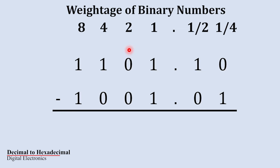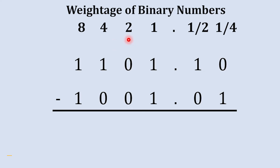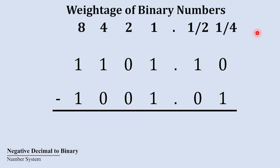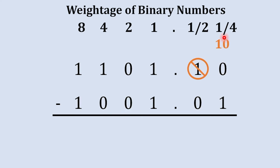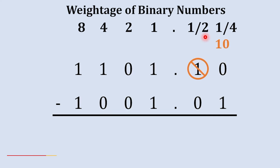When we borrow 1 from the next column to the previous column, the magnitude becomes two times higher. Decimal 2 in binary is written as 1 0, and that is why we write 1 0 when we borrow 1 from the next column. You can see the weightage of each column here. So when we take borrow 1 from the next column, it becomes 1 0 at the current position, and 0 is left in the column we borrowed from.